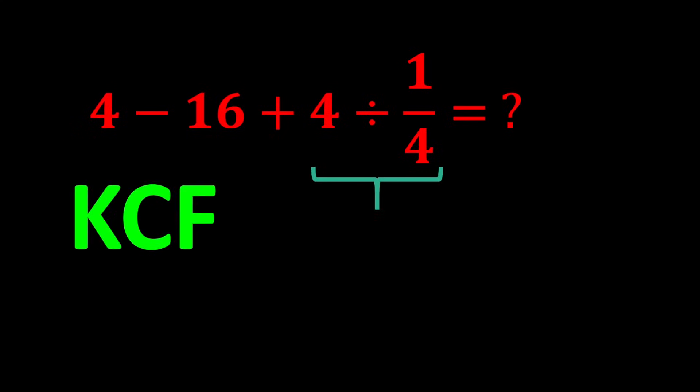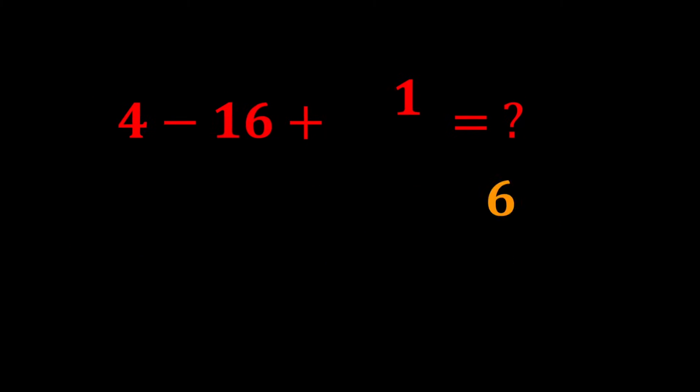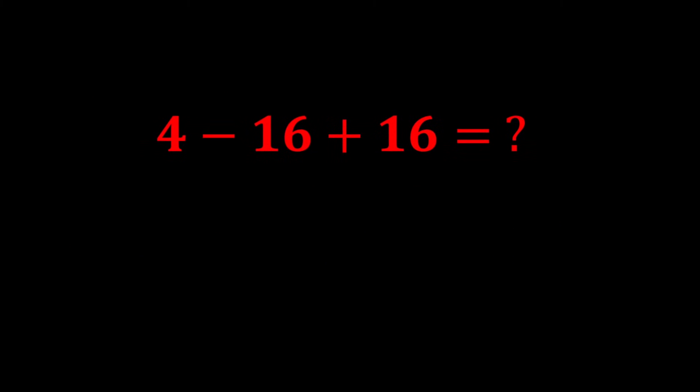Now we need to perform the division: 4 divided by 1 over 4. To solve this, we use the KCF rule — K stands for keep, C stands for change, and F stands for flip. Keep the first number as it is, change the division sign to multiplication, and flip the second number to take its reciprocal. Therefore, 4 divided by 1 over 4 turns into 4 multiplied by 4, which equals 16, and the expression becomes 4 minus 16 plus 16.